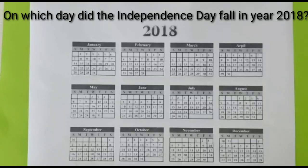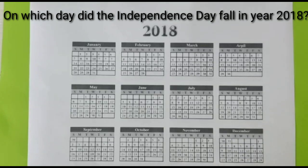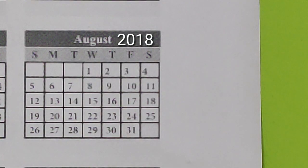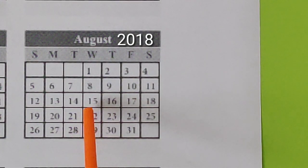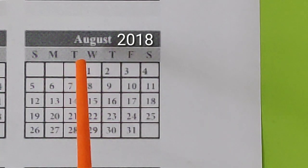Now our second question is on which day did Independence Day fall in the year 2018? We celebrate Independence Day on 15th August. To find the day of Independence Day in 2018, we will see the calendar of August 2018. Here we have a calendar of August 2018. On 15th August 2018, the day was Wednesday.